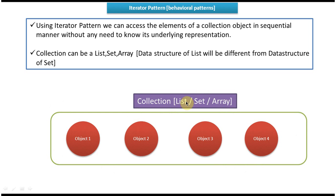If you take a list, the data structure will be different. If you take a set, the data structure of set will be different from the list data structure. If you take an array, the array data structure will be different from the set data structure. The storing mechanism of array will be different from set, and the storing mechanism of list will be different from set.